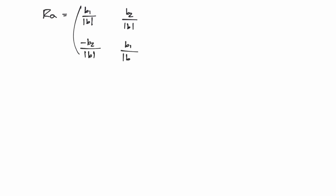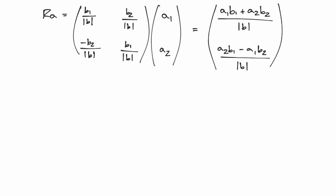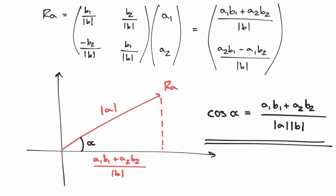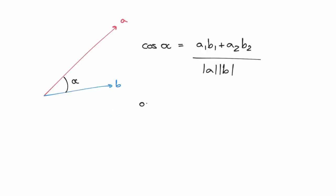Working out the matrix multiplication, we first calculate the components of RA. Then we use trigonometry as before. Cos alpha is equal to the length of the horizontal component, divided by the length of the hypotenuse. In other words, cos alpha is equal to A1B1 plus A2B2, divided by the length of A and the length of B. And that's pretty much it. To get the angle alpha, all that remains is to apply the inverse cosine function to each side.